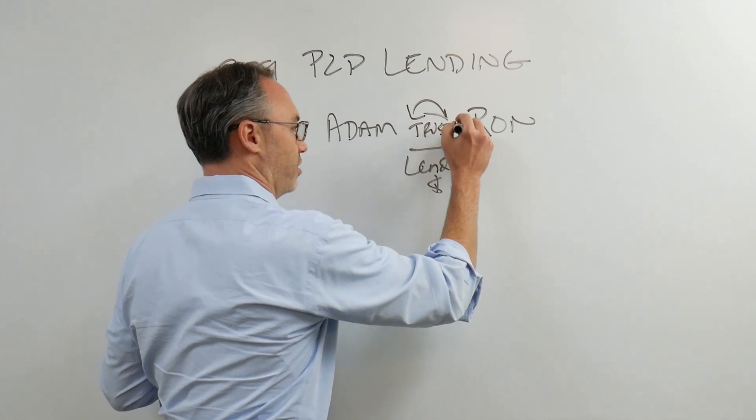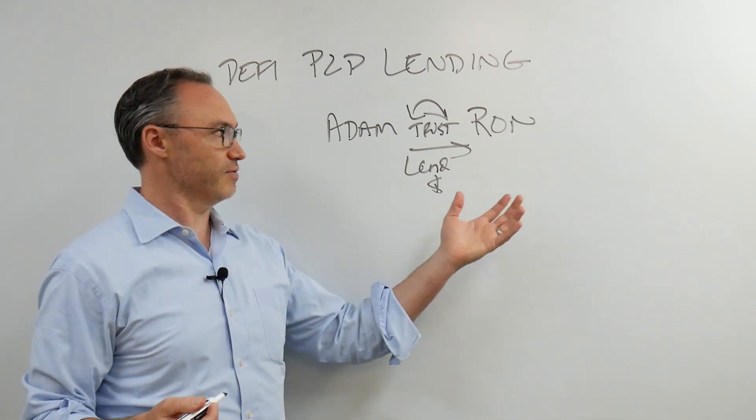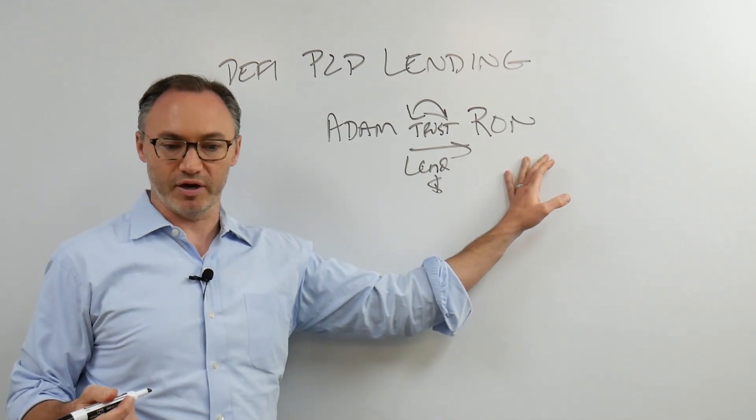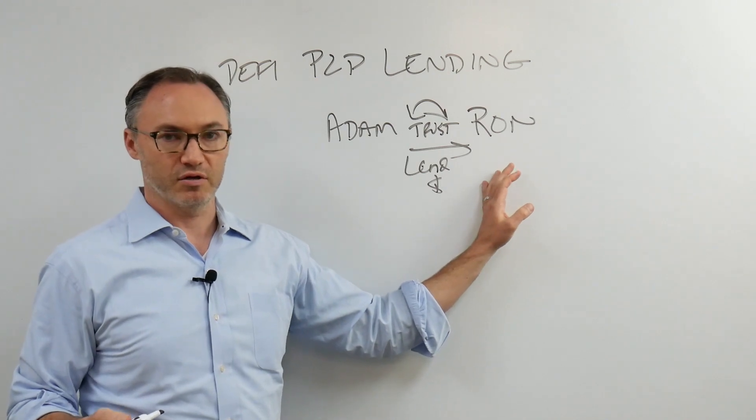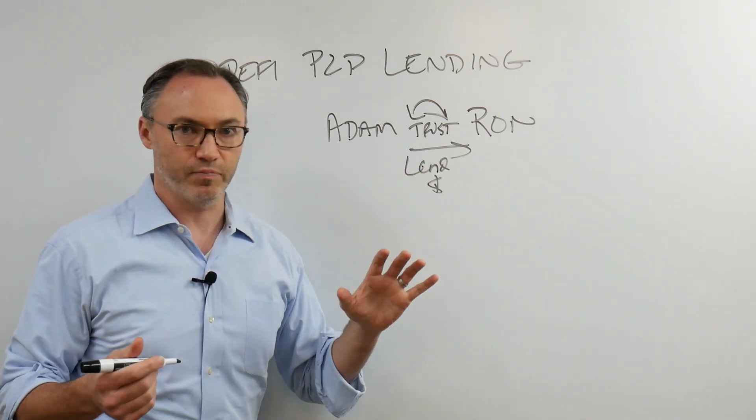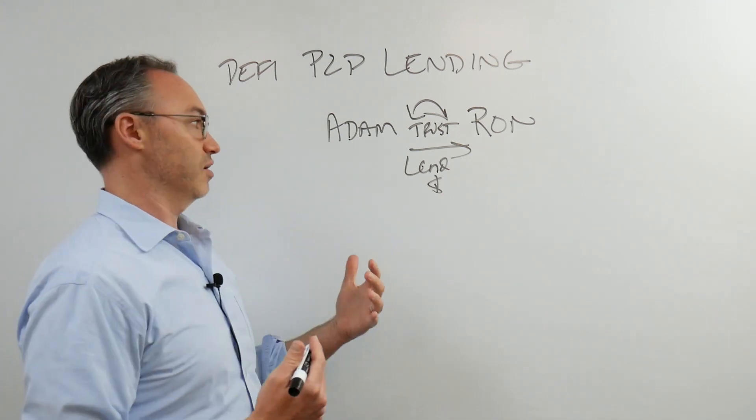The original peer-to-peer loan is Adam lends money to Ron. I lend him, this is true peer-to-peer. This is people who know each other and there's some level of trust here. I trust that he's going to pay it back. I might or might not say, hey, can you give me some collateral?